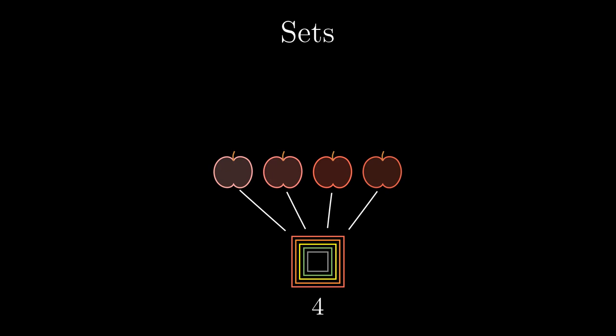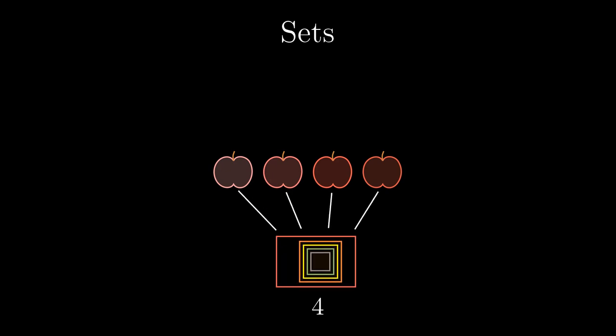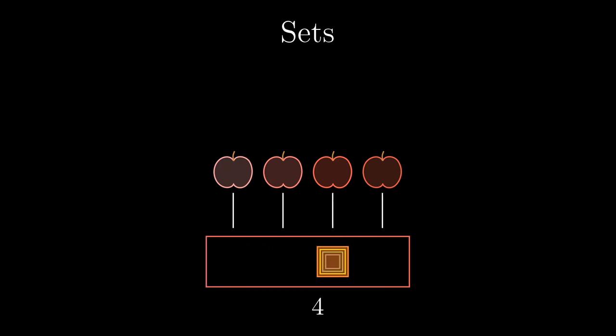However, with numbers introduced this way, every natural number except 0 would be a one-element set. It would be more practical if every natural number determined the number of its elements. These are the reasons why natural numbers are usually built differently.